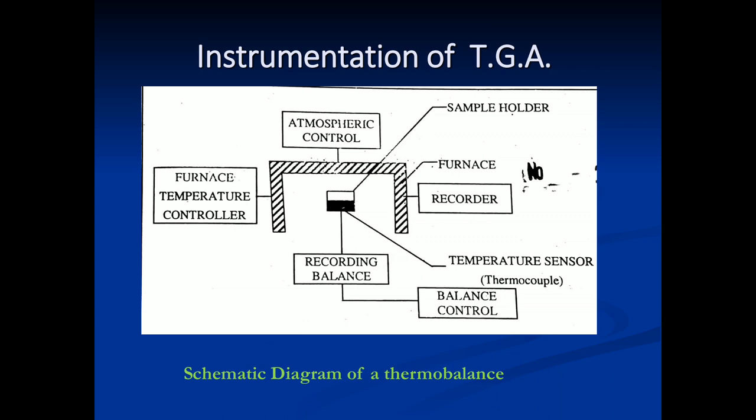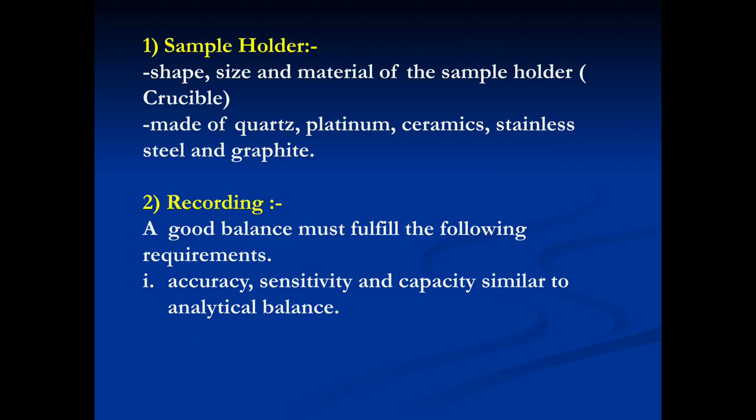Now its instrumentation of the TGA. First component is Atmospheric Control. In between, Furnace Temperature Controller and Furnace Sample Holder are inserted. At the bottom, Recording Balance and Temperature Sensor, also known as Thermocouple. First one is Sample Holder.